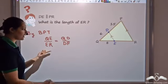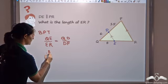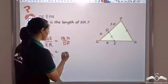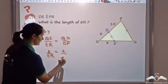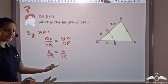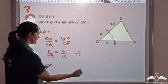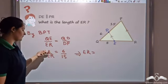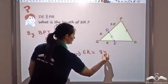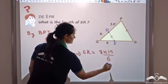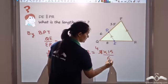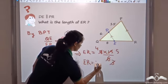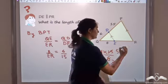Substituting the values: QE is 8, ER is unknown, QD is 6, and DP is 15. So 8 by ER equals 6 by 15. Cross multiplying, ER equals 8 times 15 divided by 6, which gives ER equals 20.